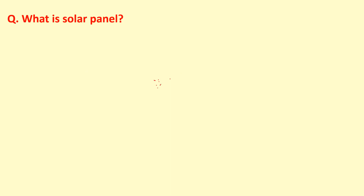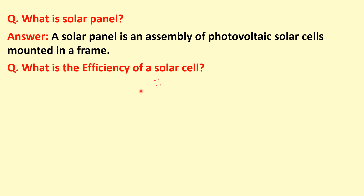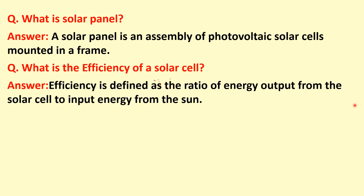What is a solar panel? A solar panel is an assembly of photovoltaic solar cells mounted in a frame. What is the efficiency of a solar cell? Efficiency is defined as the ratio of the energy output from the solar cell to the input energy from the sun.